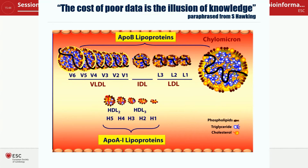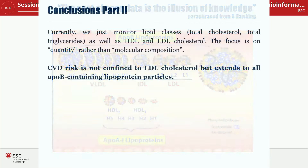To paraphrase Stephen Hawking: the cost of poor data is the illusion of knowledge. If we measure APO-B, we are not measuring LDL — we are measuring all the APO-B carrying lipoproteins. Similarly, if we measure APO-A1, we are measuring different HDL particles and lumping them together. As we know from the HDL cholesterol trials that have largely failed, HDL cholesterol may not be a good therapeutic target. We really need to better understand HDL functionality, and in my opinion, this means looking at the protein composition of the HDL particles.